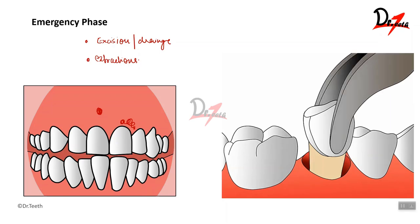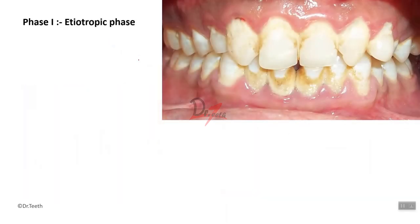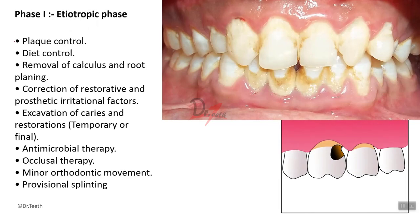Once the patient is relieved of swelling and pain we move on to the etiotropic phase. As periodontists, patients usually come to us with chief complaints like bleeding gums, halitosis, deposits, colour change of teeth, groin pain, or sensitivity. In phase one, the etiotropic phase, you treat the etiology of that particular condition or disease. You carry out plaque control and removal of calculus and root planing. If the patient has come with deposits, by removing the plaque and calculus you are treating the etiology of the condition. Along with that you give diet control.